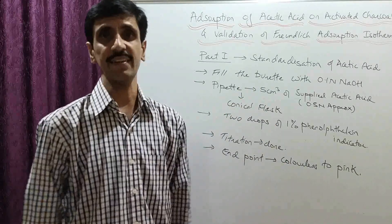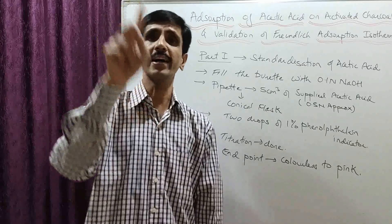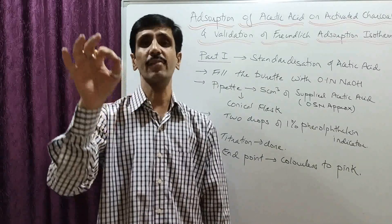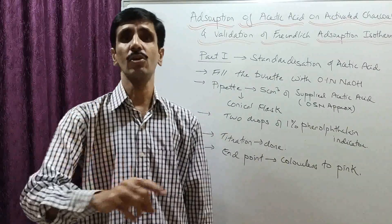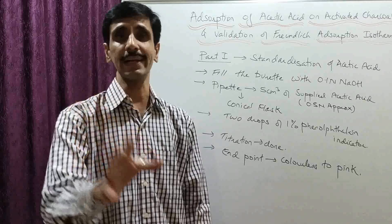Using the formula N₁V₁ = N₂V₂, where N₁ and V₁ are for NaOH and N₂V₂ for acetic acid: N₂ = (0.1 × CBR) / 5. This gives you the exact normality of acetic acid. Part 1, standardization of acetic acid, is now complete.